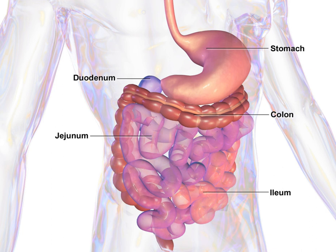The tract may also be divided into foregut, midgut, and hindgut, reflecting the embryological origin of each segment. The whole human GI tract is about 9 meters long at autopsy. It is considerably shorter in the living body because the intestines, which are tubes of smooth muscle tissue, maintain constant muscle tone in a halfway tense state but can relax in spots to allow for local distention and peristalsis.